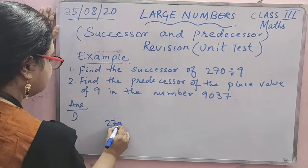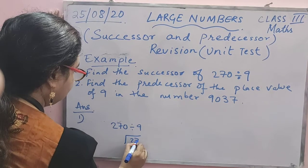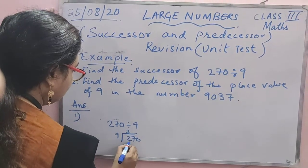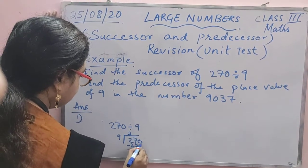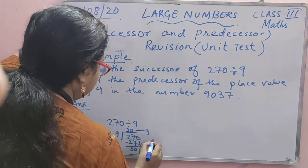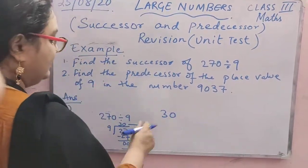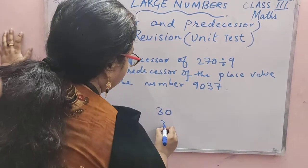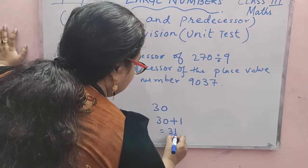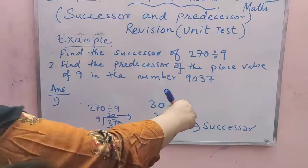This is given: 270 divided by 9. So when we divide 270 by 9 — 9 threes are 27, this will come down, and 9 into 0 is 0, so here we get 0. So 30 is your number for which you have to find the successor. In order to find the successor, we add 1. So when we add 1, we get 31. So 31 is your successor.